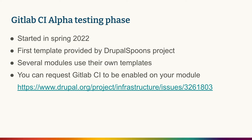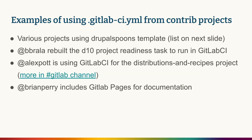The testing phase started in spring. The first template was provided by Drupal Spoons and several modules wrote their own templates, including Project Browser. If you want to request GitLab CI to be enabled on your module, you go to a specific issue, submit your request, and your testing will be enabled on the Friday of the week when you requested.